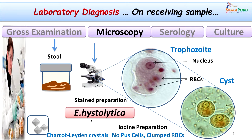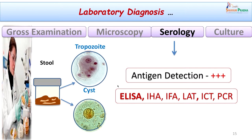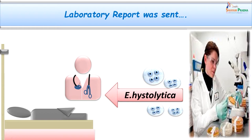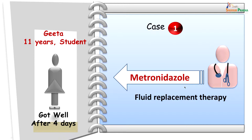We also went for quick serological tests like ELISA and latex agglutination test to look for the lectin antigen, which is part of the trophozoite cell wall of Entamoeba histolytica. This test came back strongly positive, consolidating our diagnosis of amoebic dysentery in Geeta's case. We immediately communicated to the treating physician, and accordingly she was put on metronidazole therapy. As she was dehydrated, fluid replacement was also given, and Geeta recovered within 4 days.